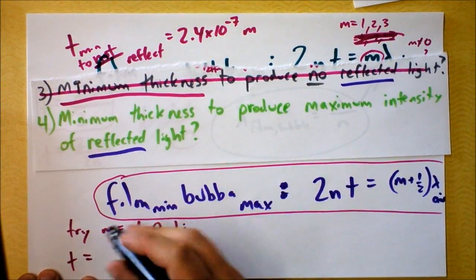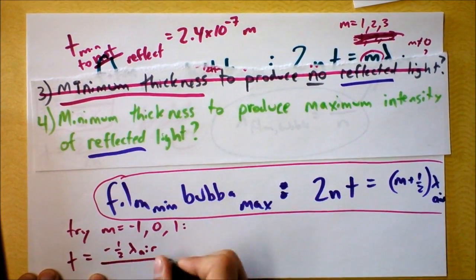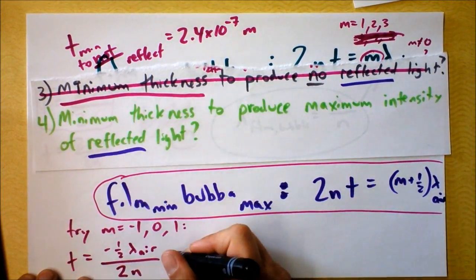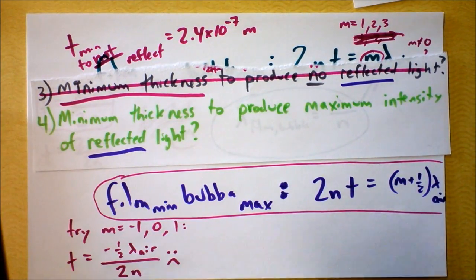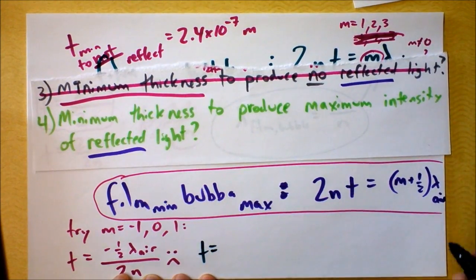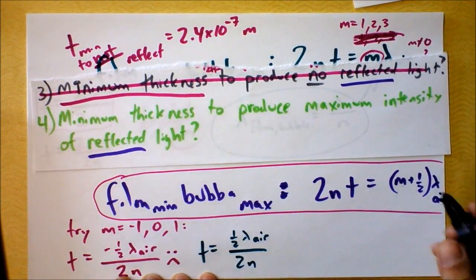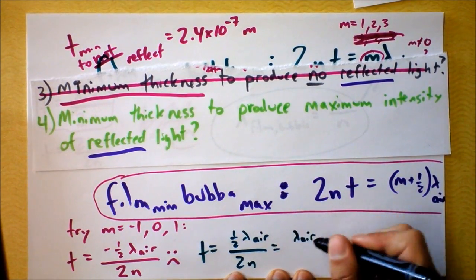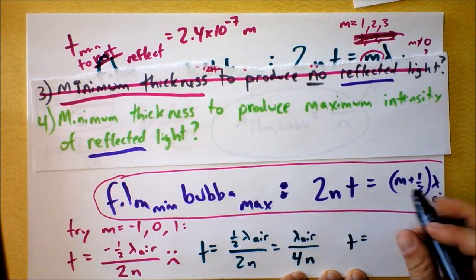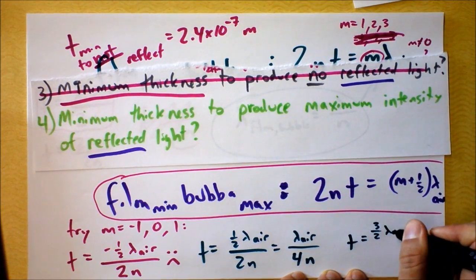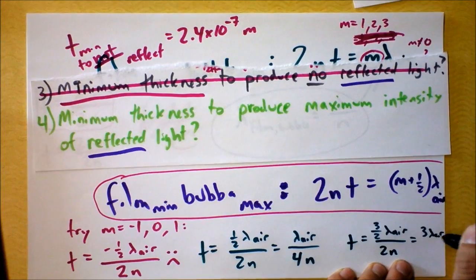Thickness equals, I'm going to try negative one first, negative one plus a half. I get negative one-half λ_air divided by 2N. This is a negative number, frowny face. I don't like negative thicknesses. Let's try M equals zero. I just get one-half λ_air divided by 2N. Now that seems promising. This is just λ_air divided by 4 times the index of refraction. We're going to try M equals one. Now I get three-halves times λ_air over 2N. That's three times bigger. Three λ_air over 4N. Does this remind you of a half-closed tube? Are there even harmonics that are missing? How odd.